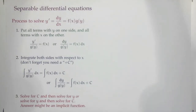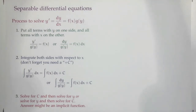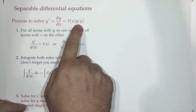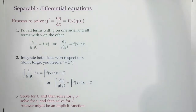The name is very suggestive — there's a separation that goes on. The type of problem is whenever you have y prime, it can be written as a function of x times a function of y. So you have some multiplication where it's only things involving x multiplying only things involving y.